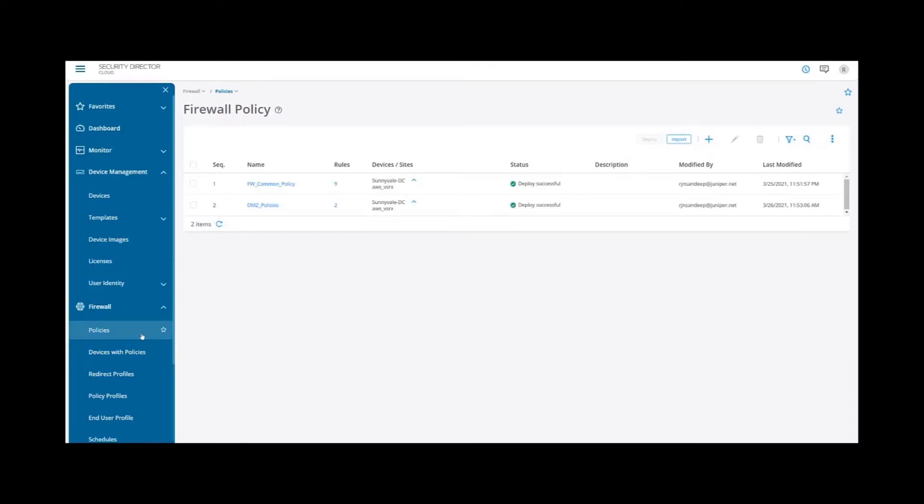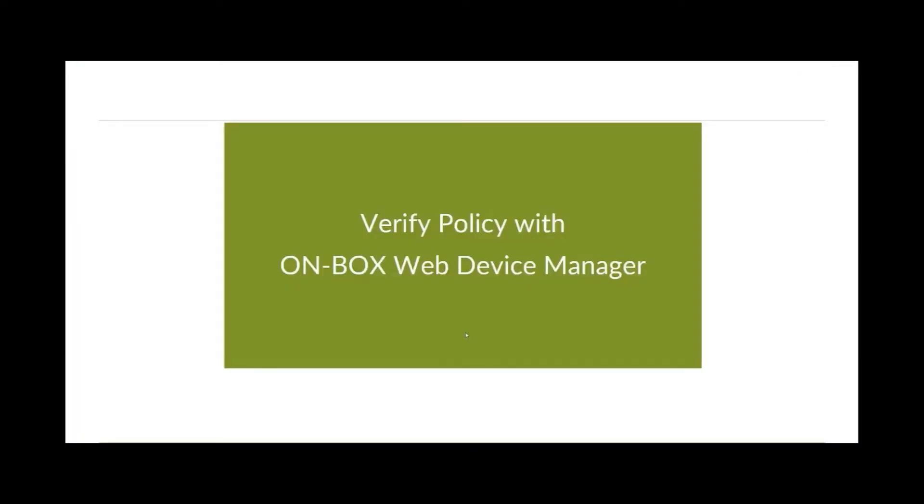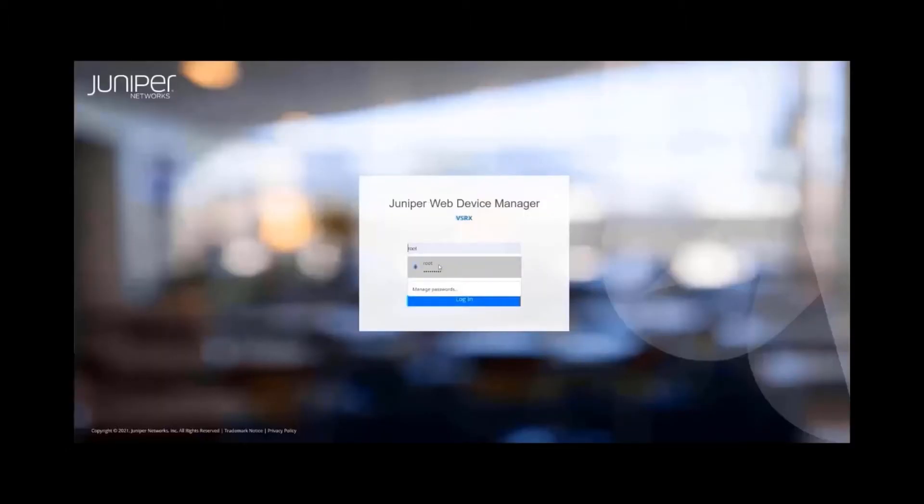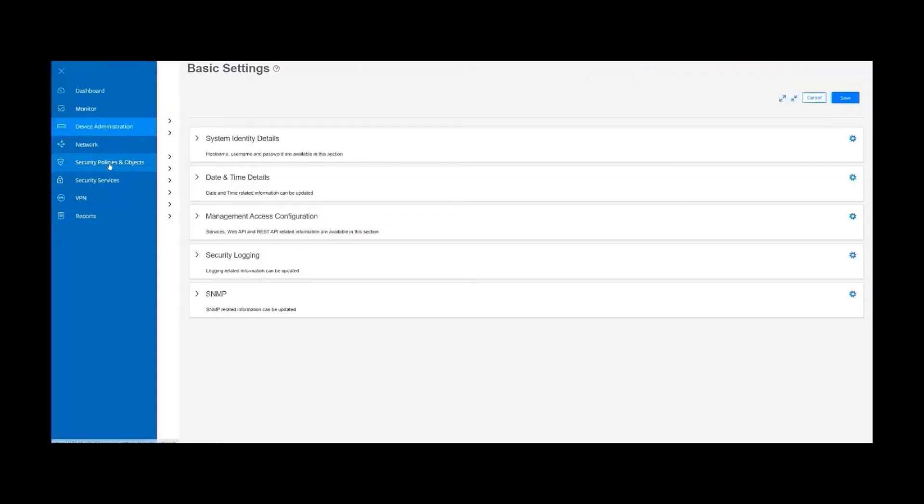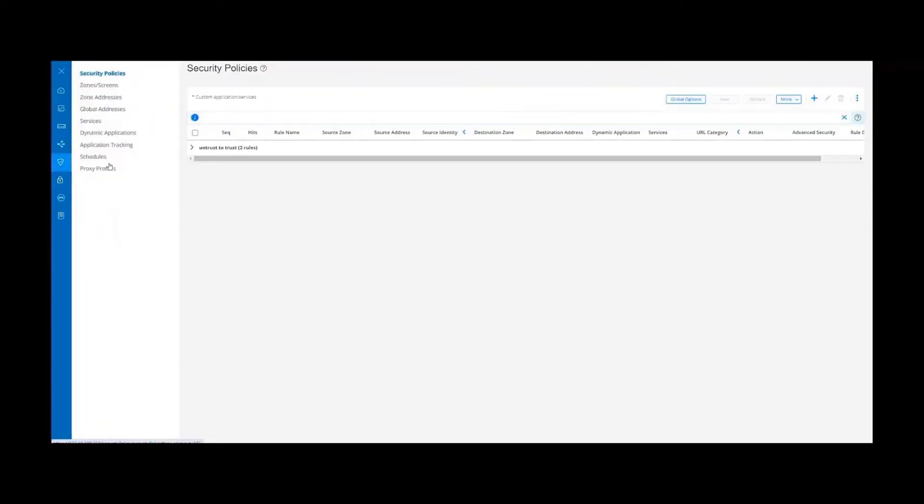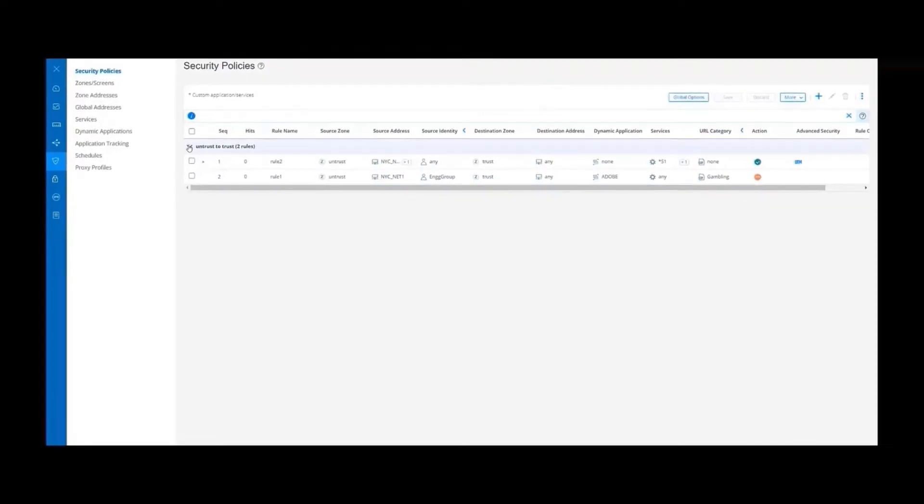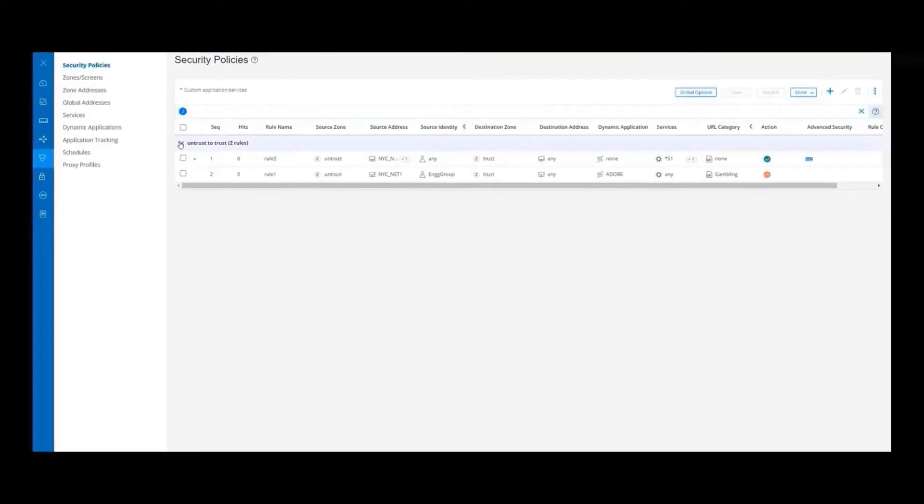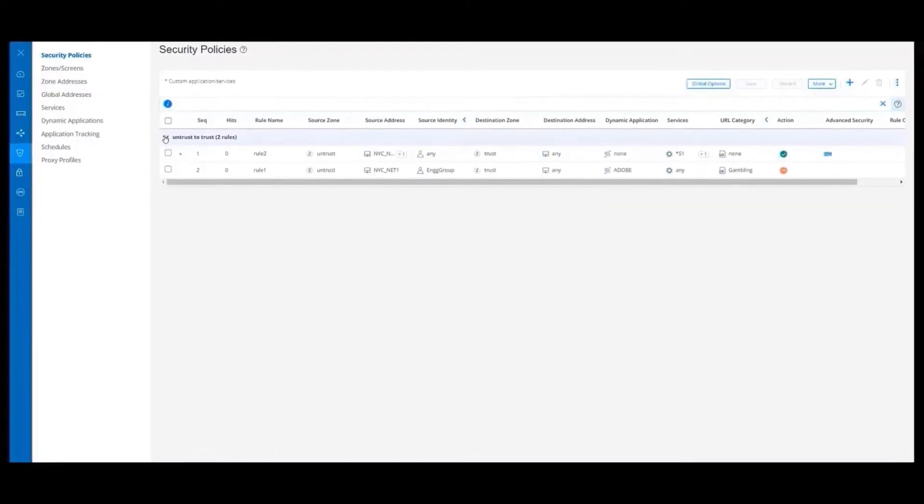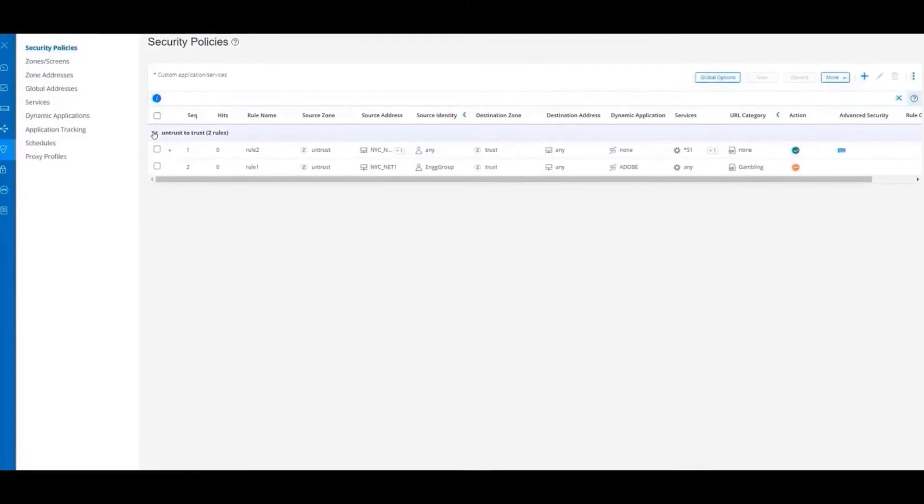So next, I'm going to log into the UI of the individual device I just onboarded to confirm that the two roles in this policy are now active for that site. So I'm logging in through JWeb and going to the individual policies. And there they are. So the ease with which we just applied a security policy to a brand new site is a key piece of the value that Security Director Cloud brings to your SASE transformation.